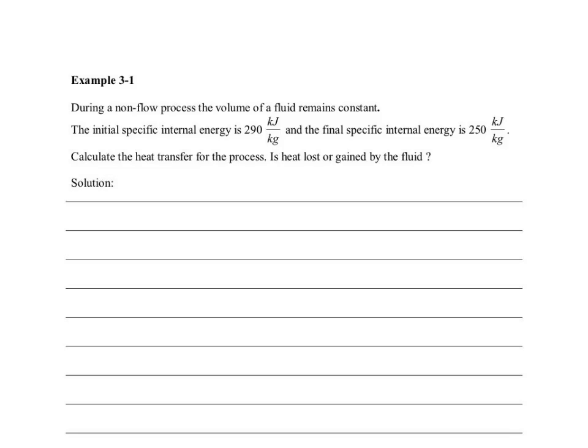Example 3-1 in the old edition. In the new fourth edition, it is example 3-3. During a non-flow process, the volume of a gas remains constant. So clearly this is a constant volume process. Let's annotate it.